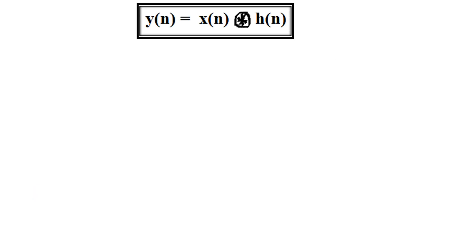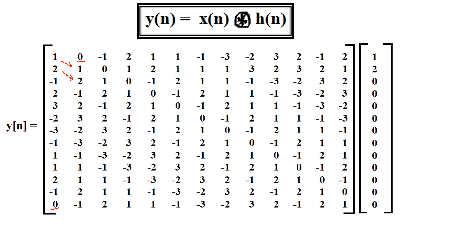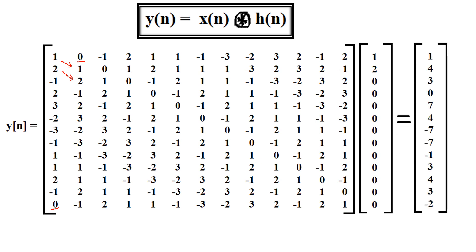Now I need to find y(n) = x(n) circularly convolved with h(n). I write x(n) in matrix form — placing x(n) in the first column, then shifting elements by one position, taking the last element to the beginning, and repeating this for all 13 positions. Multiplying this matrix with h(n) and summing gives the final output: y(n) = {1, 4, 3, 0, 7, 4, -7, -7, -1, 3, 4, 3, -2}.